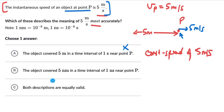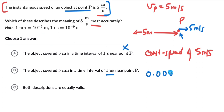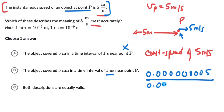The second option says: object covered 5 nanometers in a time interval of 1 nanosecond near point P. This would mean that in a very, very small time interval of 1 nanosecond, the object is covering a distance of 5 nanometers. If we write 5 nanometers divided by 1 nanosecond, the ratio still comes out to be equal to 5 meters per second.